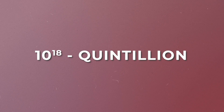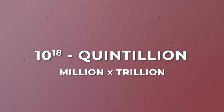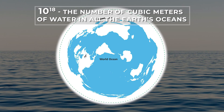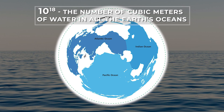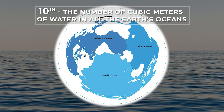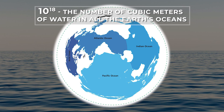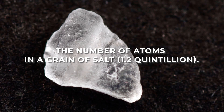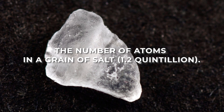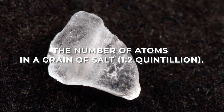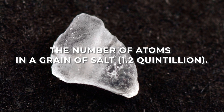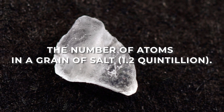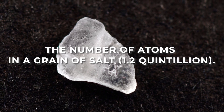Adding another zero gives us a quintillion — a million trillion. The number of grains of sand in Earth's oceans is equal to a quintillion. Also, the number of atoms in a grain of salt is equal to 1.2 quintillion.